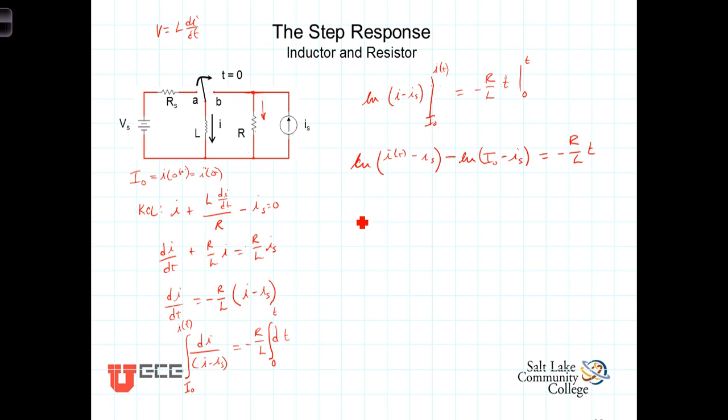Combining the log terms, we get then natural log of (I(t) minus Is) in the numerator, divided by (I naught minus Is), in the denominator, is equal to negative R over L times t.